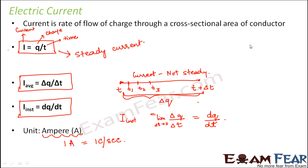Current is a scalar quantity. Although we often talk about the magnitude and direction of current — conventional current as flow of positive charges, electronic current as flow of electrons — current is scalar because we do not add currents using vector laws of addition. We add them as scalars, and therefore electric current is a scalar quantity.